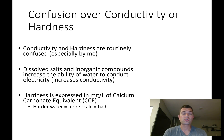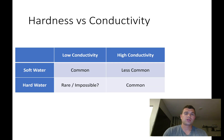Harder water equals more scale, which is primarily calcium carbonate in your cooling water system — and that's not good. It's possible to have low conductivity soft water, which is very common, and also to have high conductivity hard water.